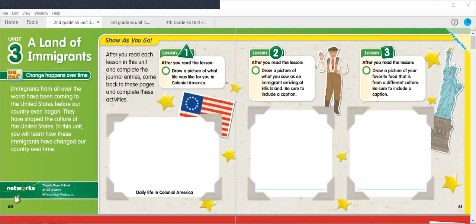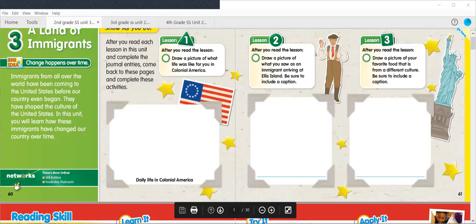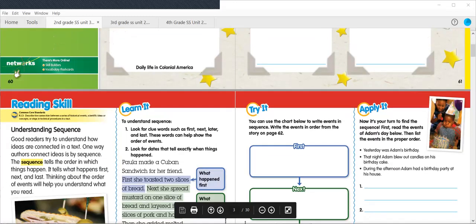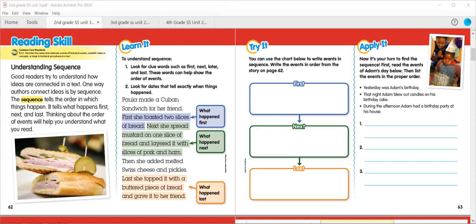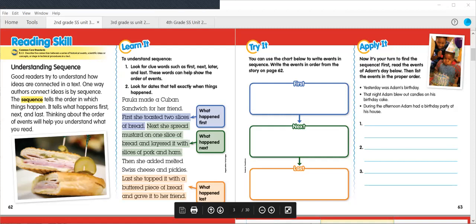Reading Skill: Understanding Sequence. Good readers try to understand how ideas are connected in a text. One way authors connect ideas is by sequence. The sequence tells the order in which things happen. It tells what happens first, next, and last. Thinking about the order of events will help you understand what you read. To learn and practice the reading skill, click on the Skill Builders icon.